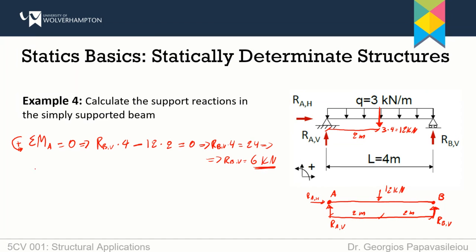Now for the sum of forces in the y-direction, equal to zero, with upward forces positive. RAV minus 12 kN plus RBV (now known as 6 kN) equals zero. This means RAV minus 6 equals zero, so RAV equals 6 kN.